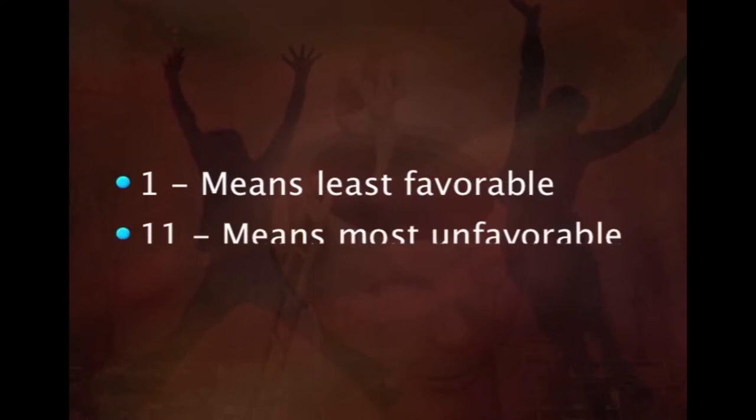The researcher puts forth all the selected statements on a scale from 1 to 11, which means that the judges, after going through each statement, have to give a scale value of 1 to 11, in the order of extremely favorable to extremely unfavorable. Therefore, 1 means least favorable and 11 means most unfavorable. It is very important here that the judges should be able to evaluate the answers, but not respond to them.